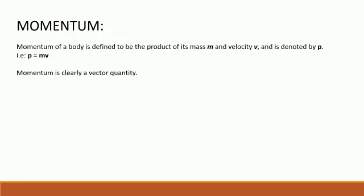Momentum of a body is defined to be the product of its mass m and velocity v, and it is denoted by p. That is, p is equal to m v. Momentum is clearly a vector quantity, that is, it has both magnitude and direction.